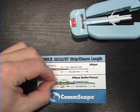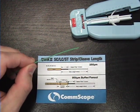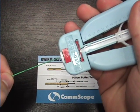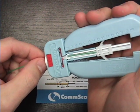Next, we can mark the fiber to 40 millimeters using the strip length card provided in the toolkit. Next, we can strip off the coating to that 40 millimeter mark.